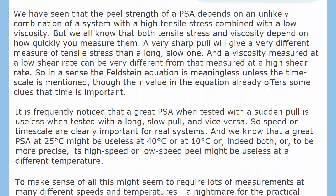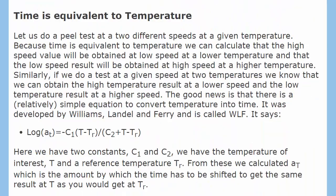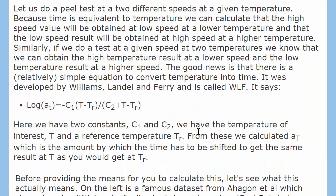The WLF formula for this is relatively simple, but a bit obscure. It says that log(AT) equals minus C1 times (T minus TR) divided by C2 plus (T minus TR). We have two constants, C1 and C2 — the WLF constants — the temperature of interest T, and a reference temperature TR, which is often the Tg, the glass transition temperature. From these we can calculate AT, which is the amount by which the time has to be shifted to get the same result at T as if you could get it at TR.